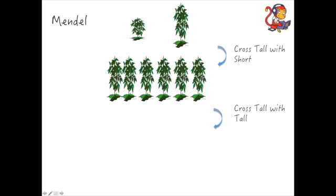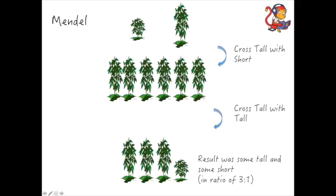But then the next step that he did, he crossed two tall plants together, and the result of that was that he had some tall plants and some short plants as the offspring.